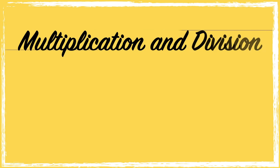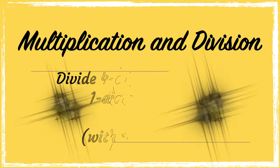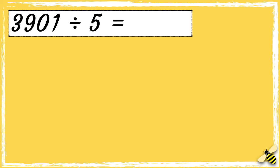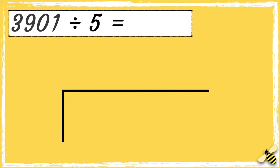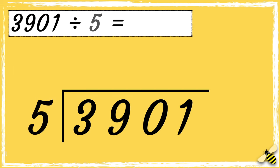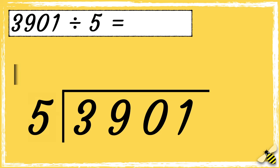In this video we're going to divide four-digit numbers by one-digit numbers. Here is a number sentence: 3901 divided by 5. First we need to draw our bus stop. We put the number that we're dividing — the dividend — inside the bus stop, and we put the number we're dividing it by — the divisor — next to the bus stop. What we need to do is find out how many times our divisor fits into these numbers.